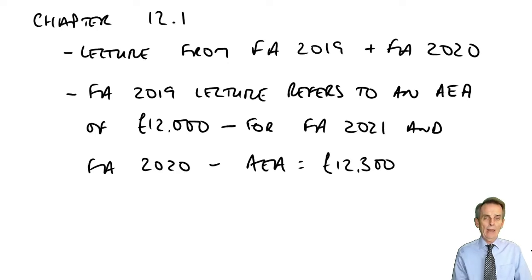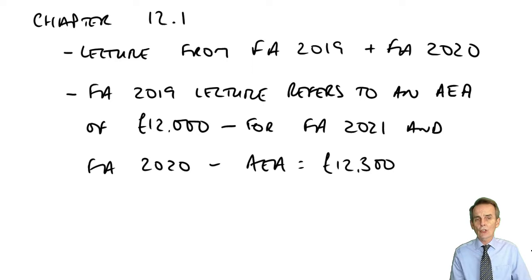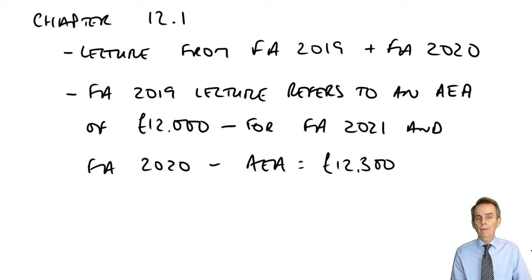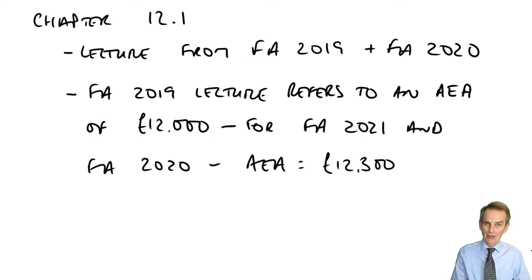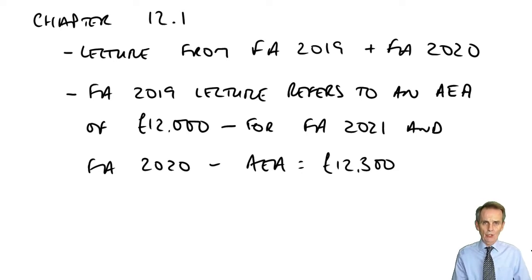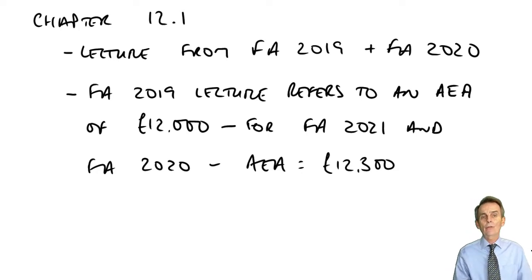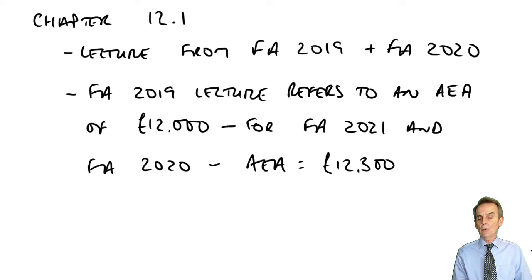Which principally means sell it — for more than you paid for it, thus creating a chargeable gain. You might sell it for less and therefore have a loss. We have to see the situations in which such a gain or loss is to be computed. If there's more than one transaction within a tax year, because we are dealing with individuals for CGT, just like with income tax, we do a computation for a tax year — the 21-22 tax year.